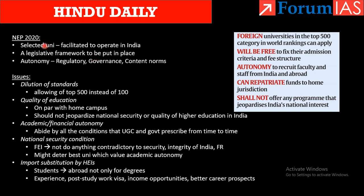The National Education Policy of 2020 says that selected universities will be facilitated to operate in India and a legislative framework should be put in place. They have to be given autonomy in terms of governance and content. The conditions are: universities in the top 500 can apply, they are free to fix their own admission criteria and fee structure, they have autonomy to recruit faculty and staff from India and abroad, and they can repatriate funds to their home jurisdiction.